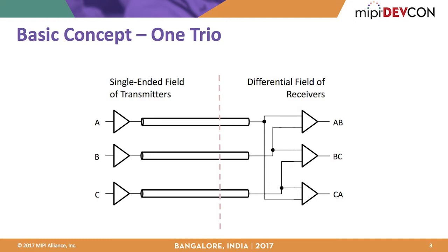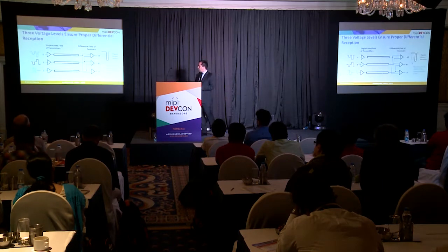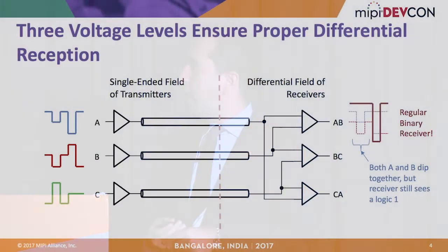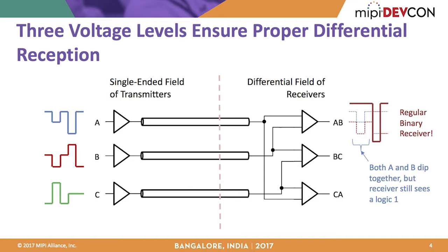One lane of C-PHY uses three wires. When talking about lanes or trios, a two-trio system has two sets of three wires working together to create effectively two lanes. Getting into how these things work: there are mapping and encoding technologies described in the specifications. The first concept is multi-level signaling on the transmitter, and how it guarantees there is absolutely no contention on binary receivers.